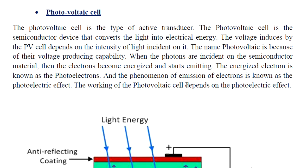Photovoltaic cells are called PV cells. They are classified as active transducers and can be used in power supply applications. The photovoltaic cell is a semiconductor device that converts light energy into electrical energy. The voltage induced by the PV cell depends on the intensity of the incident light. The name photovoltaic comes from their voltage-producing capability.